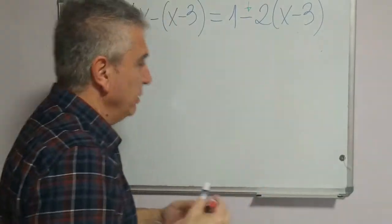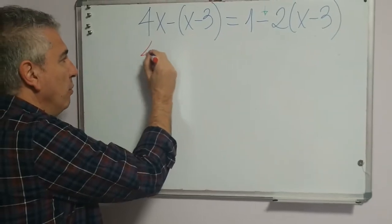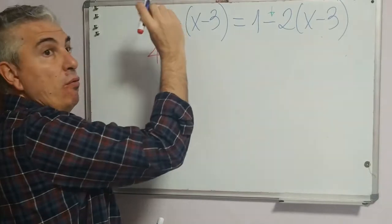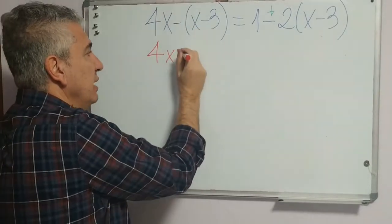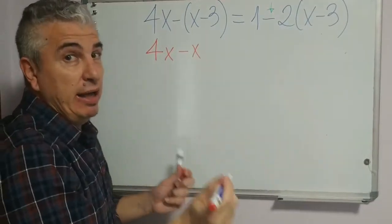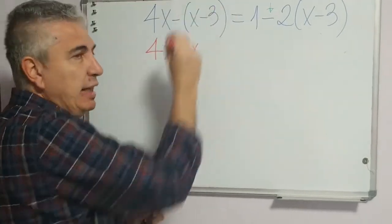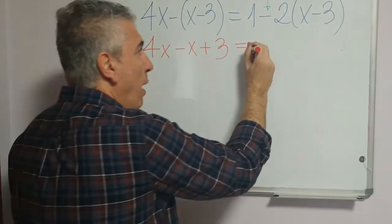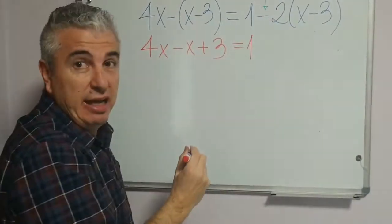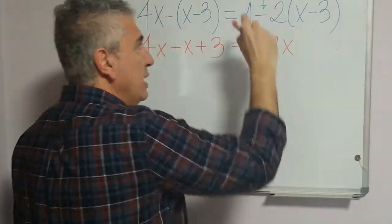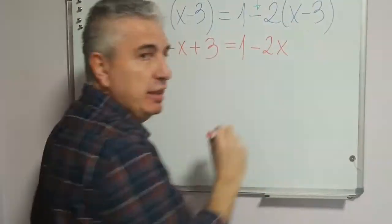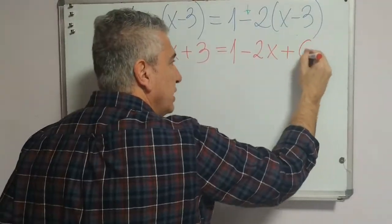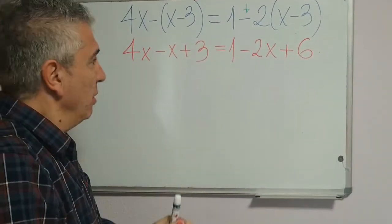Let's use color. We copy what we don't operate: 4x. Now negative 1 times x gives negative x, and negative 1 times negative 3 gives positive 3. That equals 1. Then negative 2 times x gives negative 2x, and negative 2 times negative 3 gives positive 6.